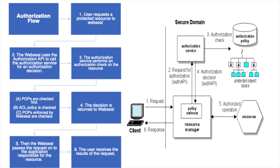The authorization process determines whether an authenticated user has the right to perform an operation on a specific resource. The authentication process involves the creation of a credential that describes the identity of the user. WebSEAL is responsible for implementing the requested operation when authorization is granted, while the authorization service performs the decision-making action on the request.